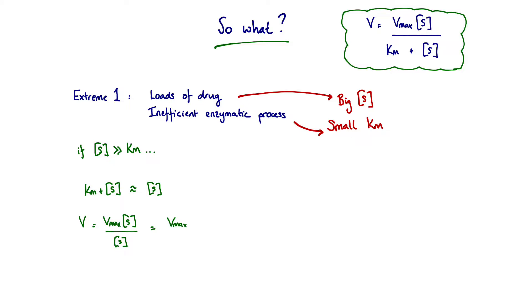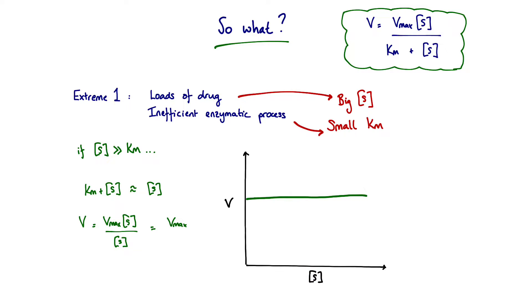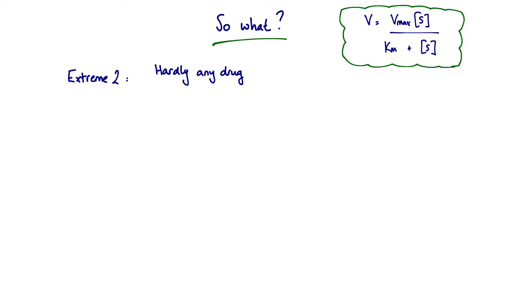If we plot the rate of reaction as a function of varying substrate concentrations we would see a straight line — the rate of reaction is independent of substrate concentration. In the specific drug example, the rate of elimination is a constant unaffected by plasma drug concentration. This is exhibiting zero order kinetics, often referred to as saturation kinetics.